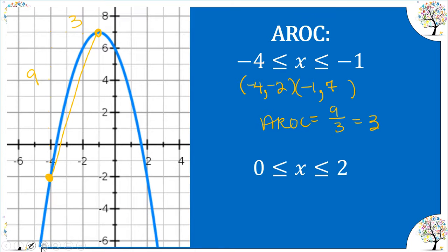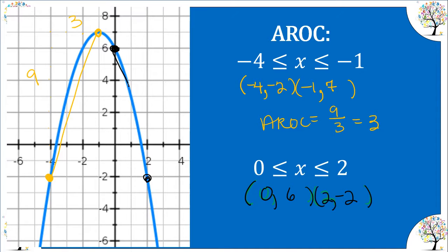Now let's look at the other given interval from 0 to 2. Let's change the color so we can see it. When x is 0, our output is 6. When x is 2, our output is negative 2. This time our secant line is negative — it's sloping down. The rise is negative 8 and the run is 2, giving us a final answer of negative 4.